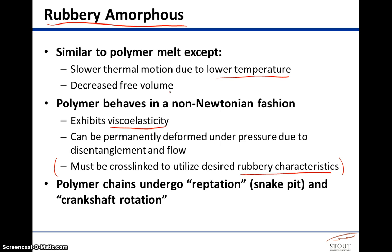Uncross-linked polymer chains are able to undergo reptation. Reptation has a similar root as 'reptile,' which underscores the snake-like movement that chains in the rubbery amorphous phase can undergo. We've compared it to a plate of spaghetti or a pit of snakes. In this phase, that motion believed to be responsible for the rubbery amorphous phase really is like snakes crawling in a pit. There are two types of motion in this regime: reptation and crankshaft rotation of the backbone of the chain.